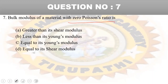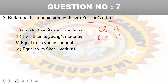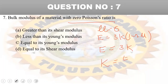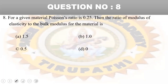Next question: bulk modulus of a material with zero Poisson's ratio — is it greater than, less than, or equal to Young's modulus or shear modulus? Using the relation E equals 3K into (1 minus 2mu), substituting mu equals 0 gives K equals E by 3, which is less than Young's modulus. Option B is the right answer.